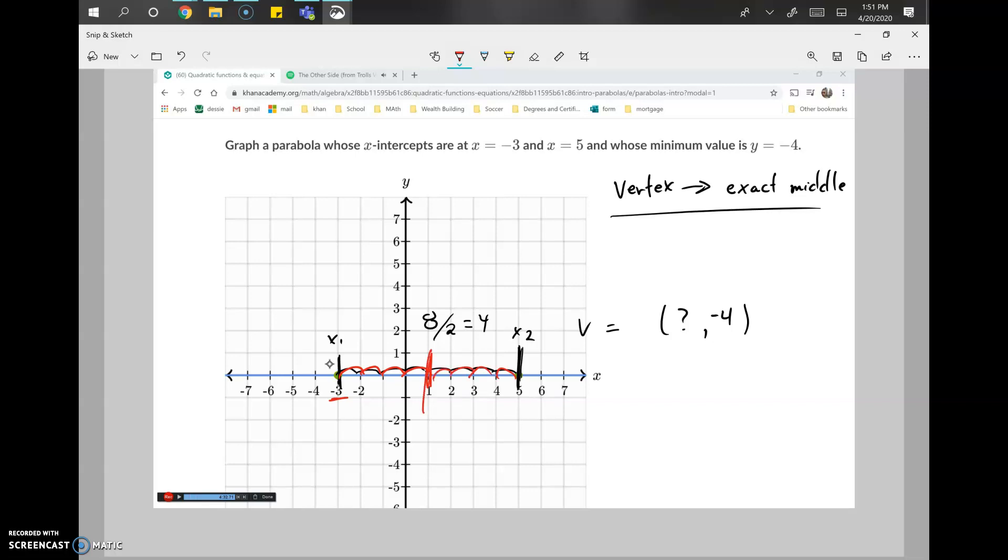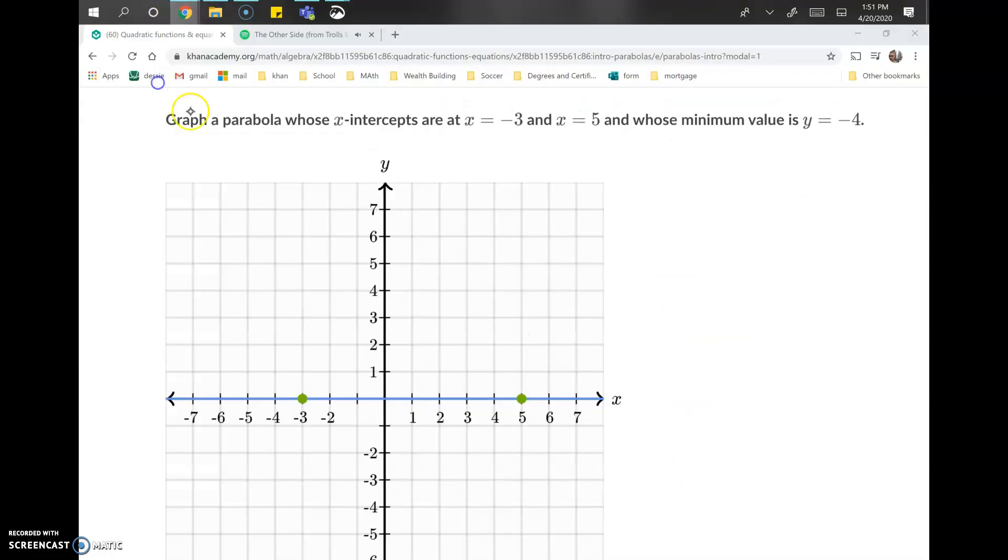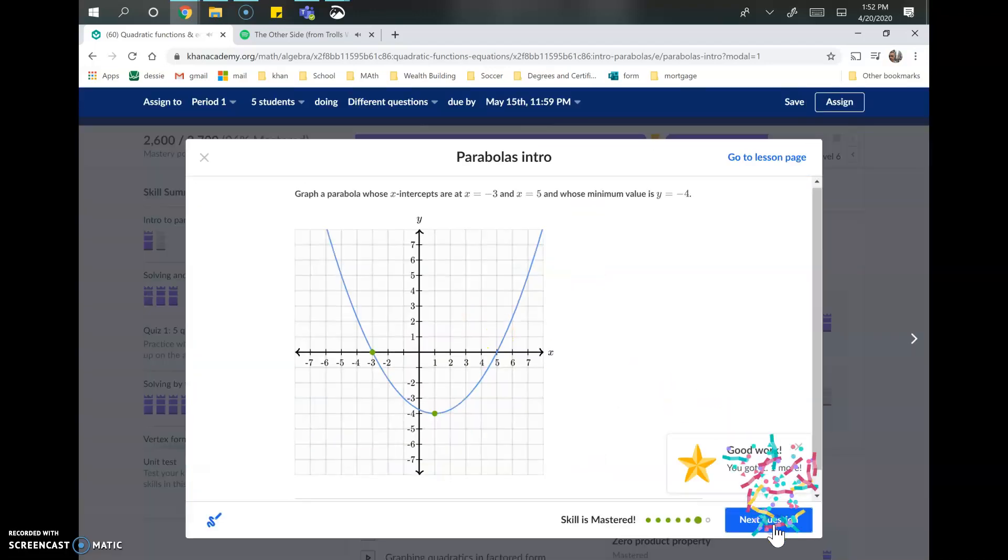So this is the exact middle of this value, 1 for x, which means that the vertex has to be in line with it. We know now the vertex is positive 1 for x and negative 4 for y. Let's go ahead and drop this even with 1 for x and negative 4 for y, and then we can either put this at 5 or negative 3. Either way, we have options for that second point.